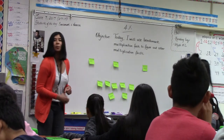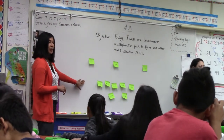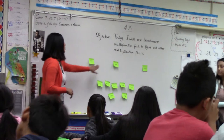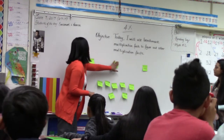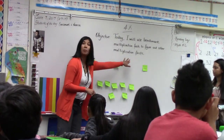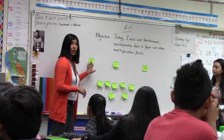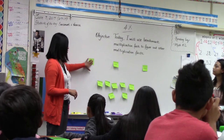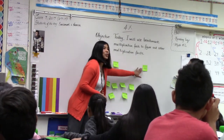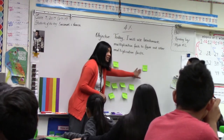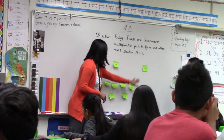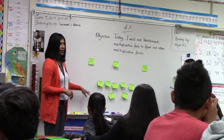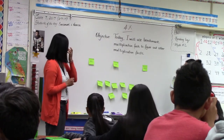With your partner, you will take one of them at a time and place them in the right place, kind of like a number line. But you need to use one of the facts that's already here to figure out what the product of these ones are. Let me give you an example.